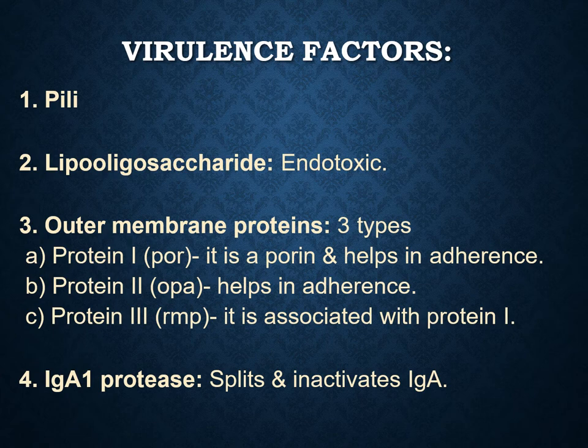The next important topic is the virulence factors of Neisseria gonorrhoeae. The first important virulence factor is pili — hair-like projections that help the organism adhere to the host cell. The next is lipooligosaccharide, which is endotoxic in nature. The outer membrane proteins are of three types: protein I (porin protein), protein II (Opa protein), and protein III (Rmp protein). Protein I is a porin and helps in adherence; protein II also helps in adherence; protein III is associated with protein I. The IgA1 protease splits and inactivates IgA antibodies in the host, thereby facilitating infection.